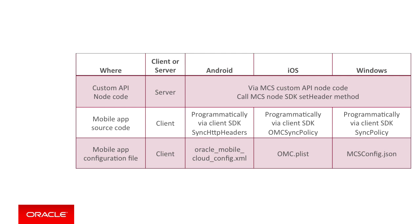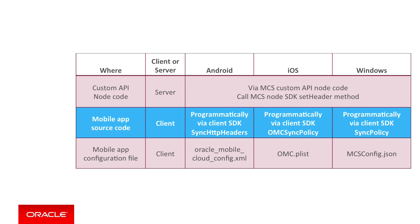There is a problem with specifying the policies in the configuration files: they aren't dynamic. You can't apply different policies at runtime based on different scenarios or rules. To solve this, the client-side SDK for custom APIs allows you to define the policies programmatically, which overrides anything specified in the configuration files. Your mobile platform SDK will have its own set of classes for doing this.